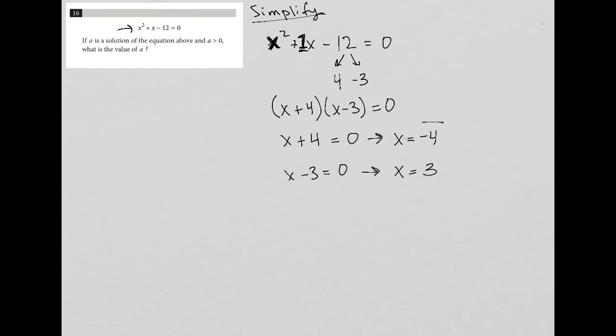So here are my two solutions. But the question says a is a solution, and that a is greater than 0. So the only solution that's greater than 0 is 3, because negative 4 is less than 0. So I only have one solution here that's actually greater than 0, which means that this a that the question is referring to must be equal to 3. And therefore, my answer to this question is 3.